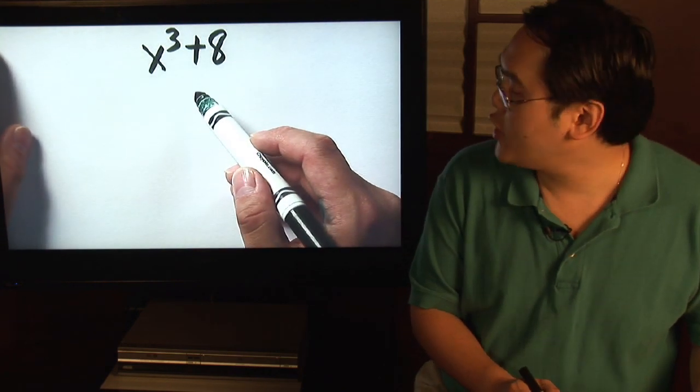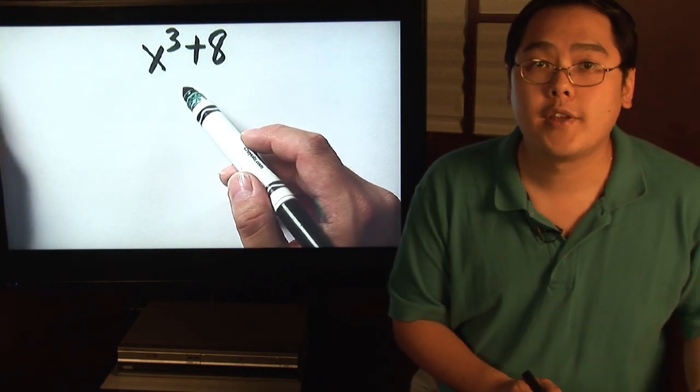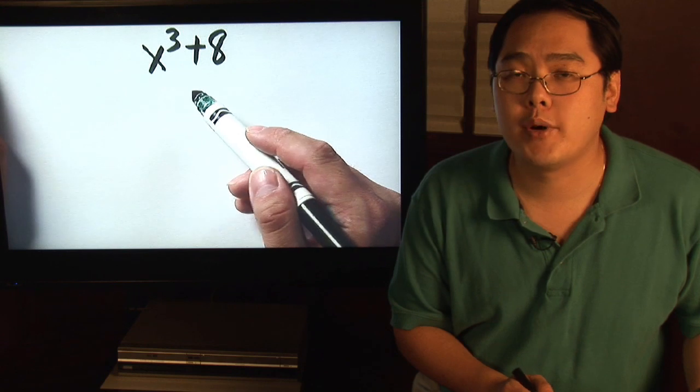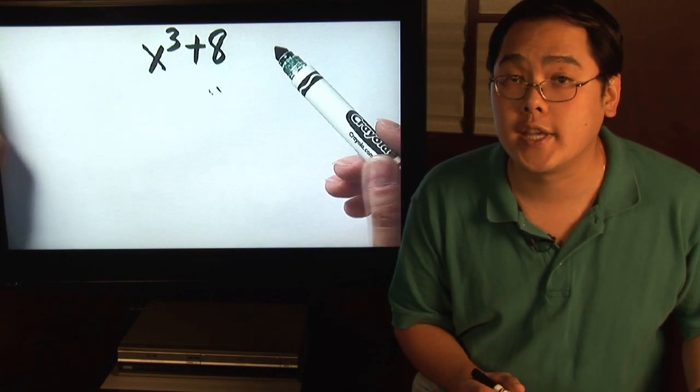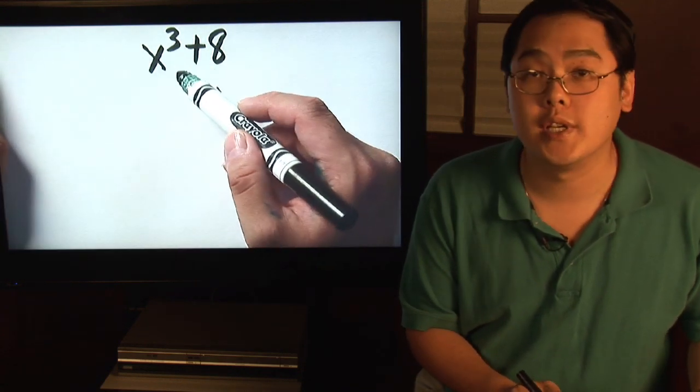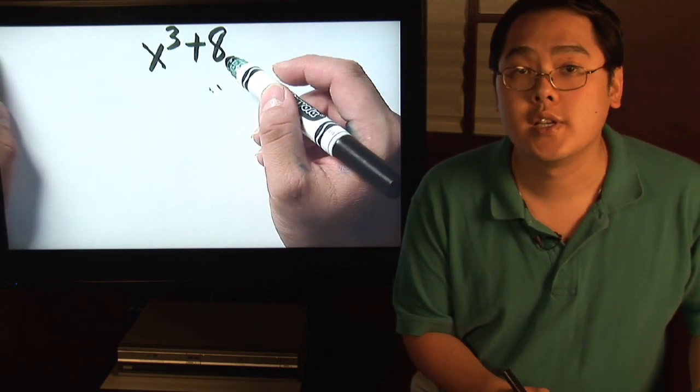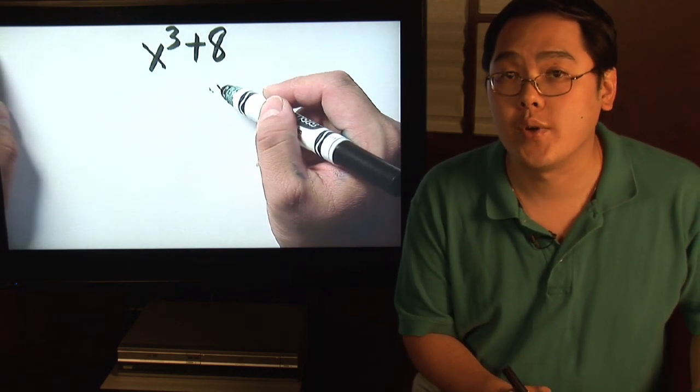Now suppose you want to factor x cubed plus eight. The first thing to do is to make sure that both terms are written in terms of cubes. We know that x cubed is of course already cubed. Now the question is what number cubed is going to give you eight?